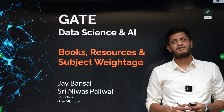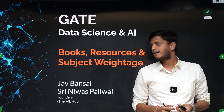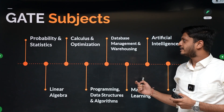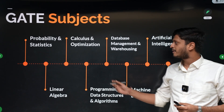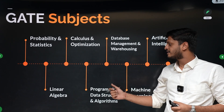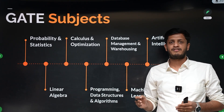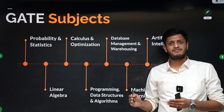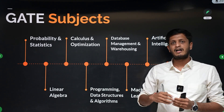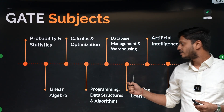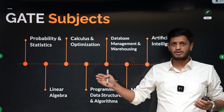Hi everyone, welcome to the ML Hub. In this video we will discuss the books, resources, and subject weightage for the GATE DA exam. Coming to the GATE subjects in the GATE DA syllabus, we have eight subjects overall. The math section can go up to 40-50 marks, and I will discuss the subject weightage for 2025 and 2024 at the end of the video.